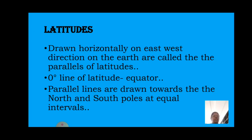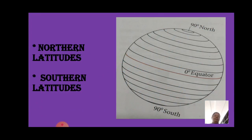The zero degree line of latitude, which divides the Earth into two halves, is known as the equator. From the equator, parallel lines are drawn towards the north and south poles at equal intervals. The latitudinal extent between one degree line of latitude on Earth is 111 kilometers. You can see in the picture 90 degree north, that is the North Pole, and 90 degree south, that is the South Pole. At the center of the Earth we have the equator — it is the longest latitude.